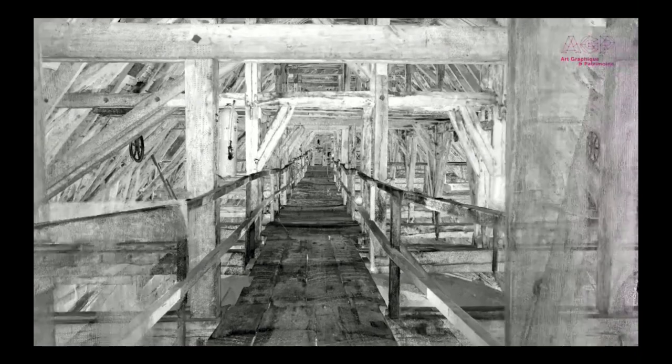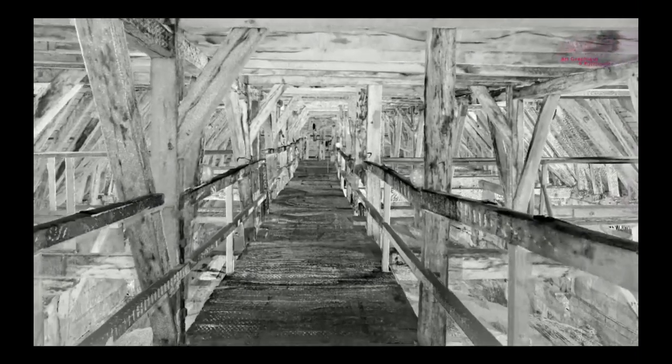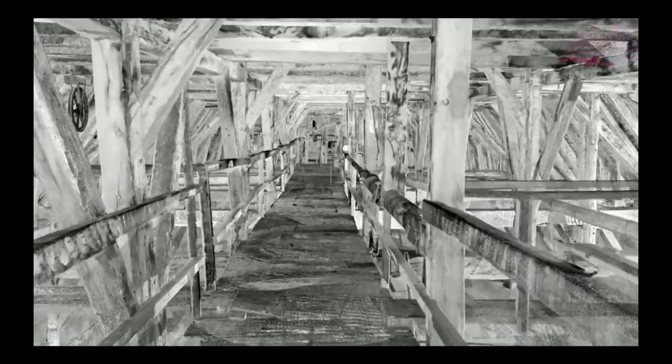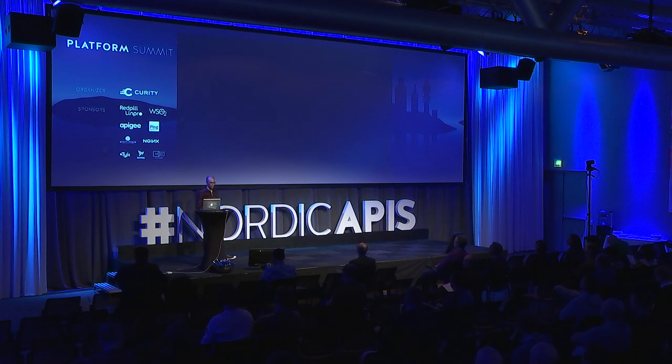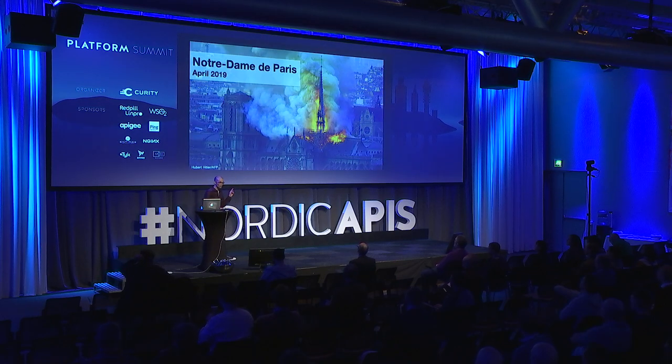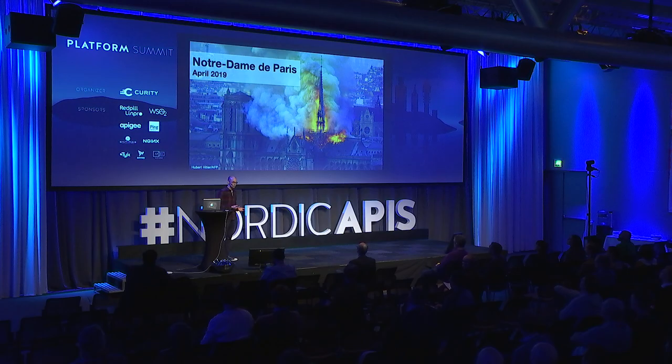We're definitely not going to talk about carpentry for the next 20 minutes. But there are two things interesting in this video. First, it has not been shot with a regular video camera, but rather with a 3D laser scanner, which gives you a very accurate 3D model of your scene. And second, it supported the roof for 800 years — but now it's gone. You may have recognized Notre Dame de Paris, that burned a few months ago. Now you understand why this 3D model is essential, and it will give precious hints to rebuild the cathedral.